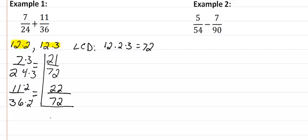Add these up, and I am going to get 43 over 72. I have no common factors, so my answer then is 43 over 72.